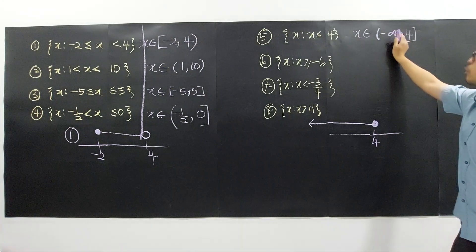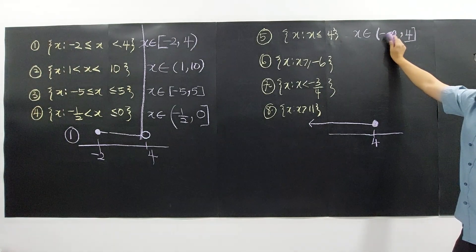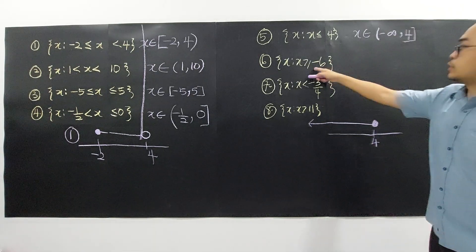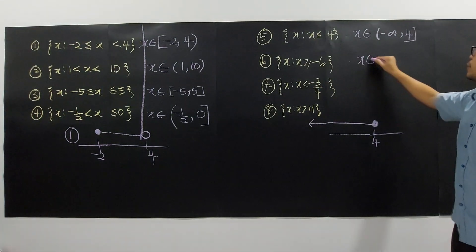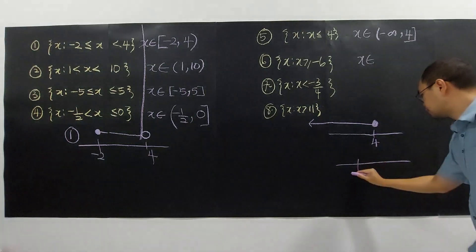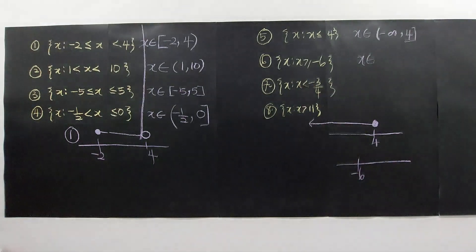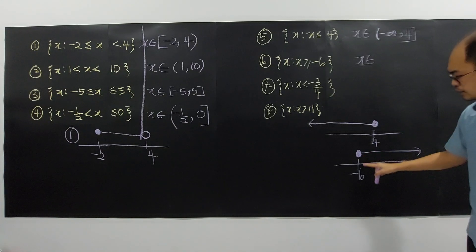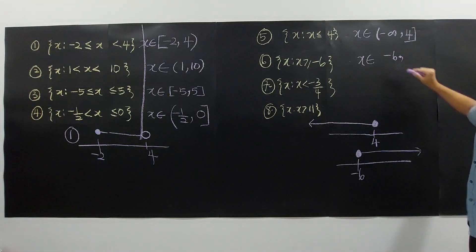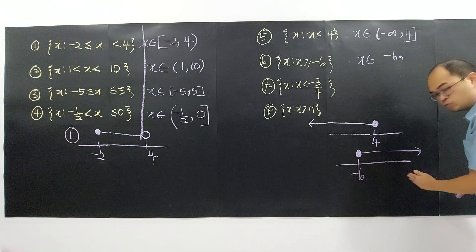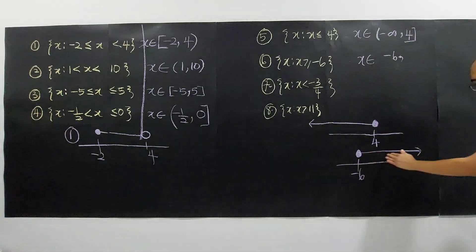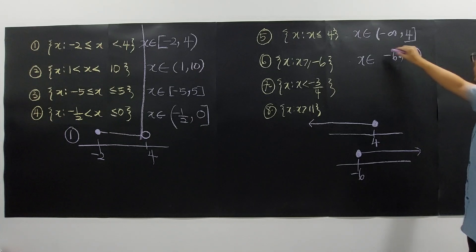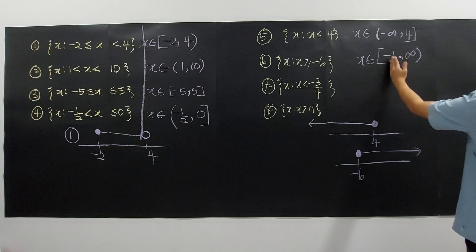Note that the smaller number is always written on the left. For X greater than or equal to negative 6: negative 6 is included, so we use a closed bracket. All numbers greater than negative 6 — like negative 5, negative 4, 1, 2, 3, 4 — extend to the right, which is unbounded. So we write this as negative 6 to positive infinity, with an open bracket at positive infinity. We mark this on the number line with an arrowhead pointing right.